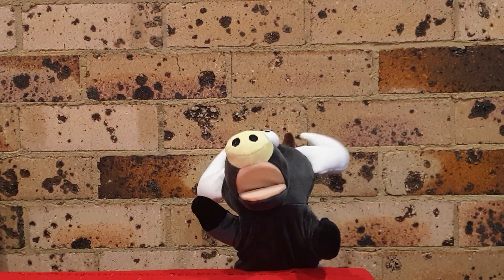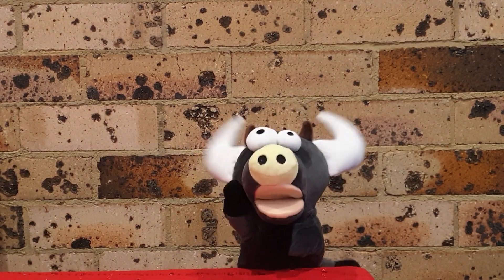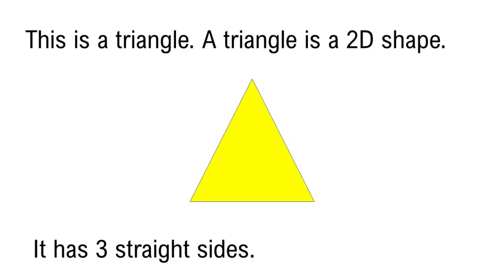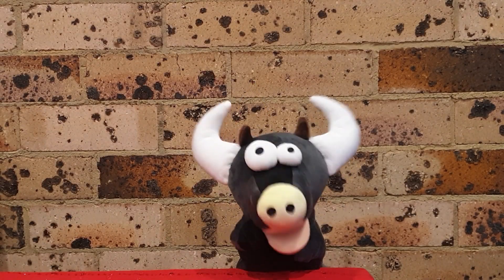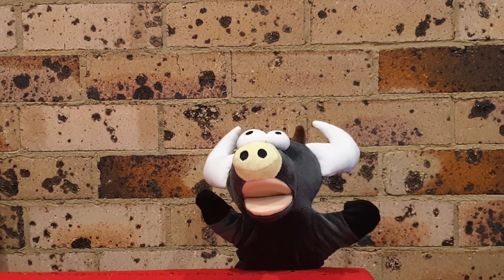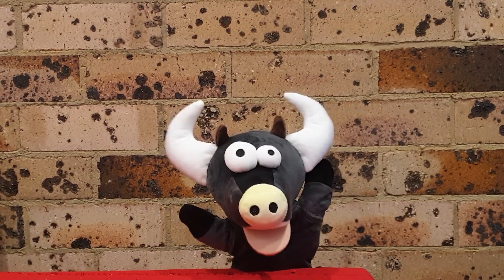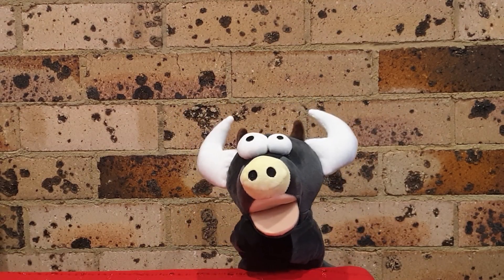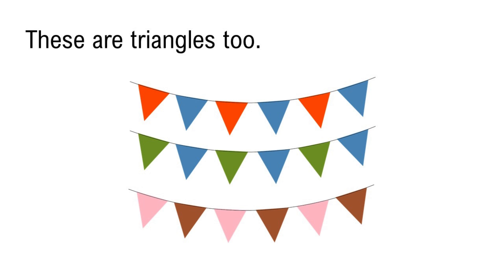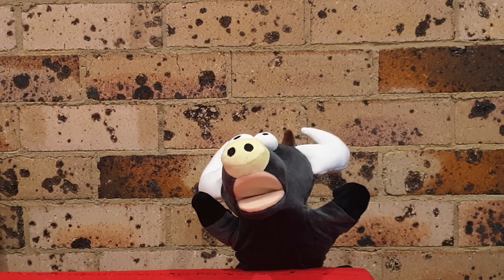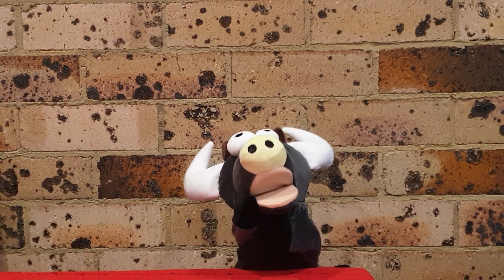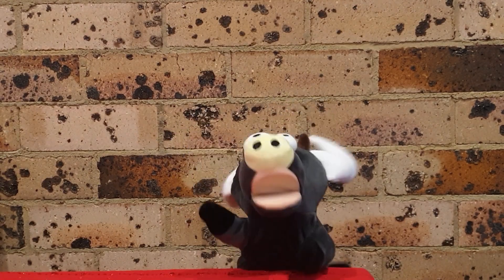This is a triangle. It is a 2D shape. It has three straight sides. These are also triangles. This is not a triangle. It is not flat. It is 3D — a prism.